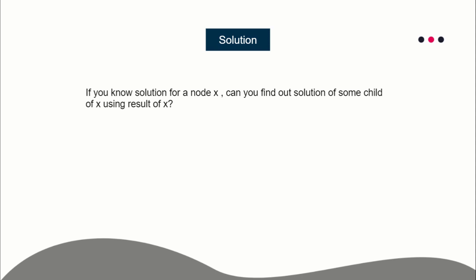When building a solution for rerooting DP, always ask yourself this question: if you have a solution for a certain node X, can you find the solution for some child of node X using the result of X? In most rerooting DP problems, this is the key — can you use the parent's result to calculate the child's result? If that is possible, then rerooting DP can be applied.